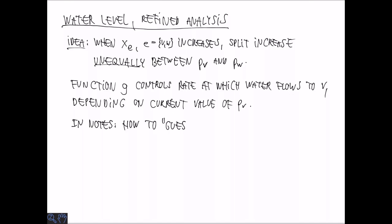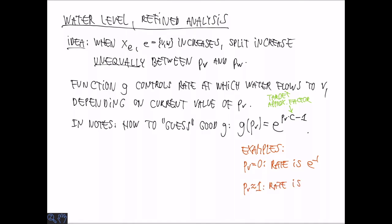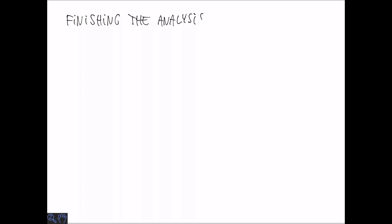And the way we are going to be splitting it is going to be controlled by a function G which is going to control the rate at which water flows to the vertex in L, so V. And this is going to depend on the current value of the dual variables. In the notes they describe how they come up with a good choice of G and I am not going to cover that but in the end what they come up with is this function. So it is an exponential function that increases with the level. So basically when the level is zero the rate of filling is going to be e to the minus one and when it is almost full the rate is going to be e to the c minus one where c is going to be the target approximation factor. Of course if this is the rate at which water flows to V then water is going to flow to W its neighbor at a rate which is one minus G of PV.